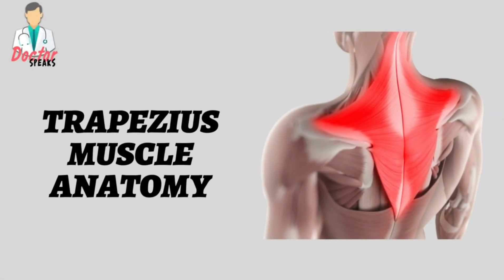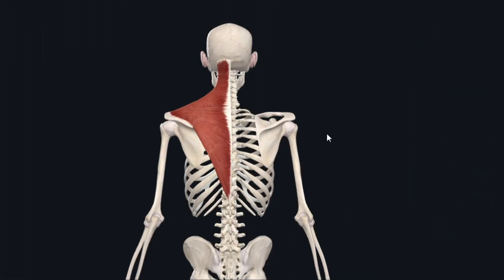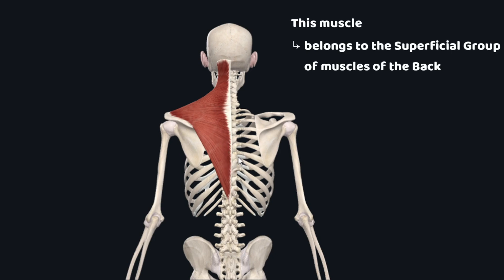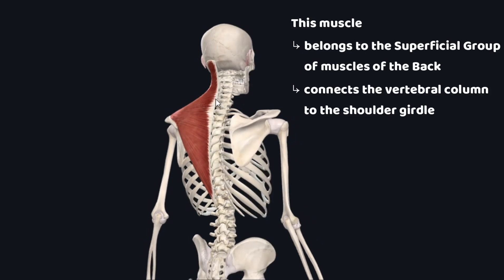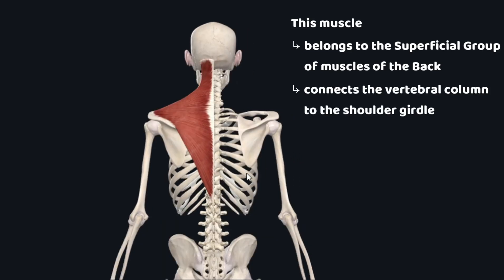Hello, welcome back. Today we are going to study an important extrinsic muscle of the back: the trapezius muscle. The trapezius is a flat triangular muscle and belongs to the superficial group of muscles of the back. This muscle connects the vertebral column to the shoulder girdle, as you can see.